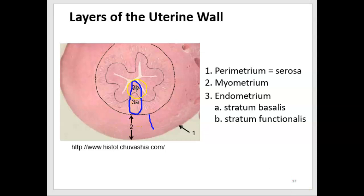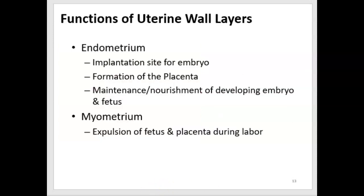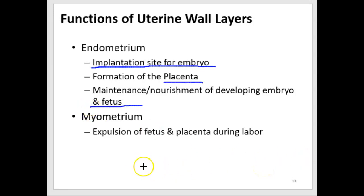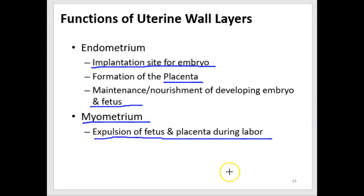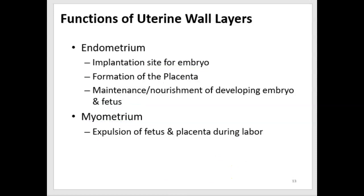There are two layers of the endometrium labeled 3A and 3B. One layer is called the stratum basalis, and the other is called the stratum functionalis, which is the most interior layer. The endometrium forms the placenta and provides a nourishing site with blood vessels, epithelial cells, and nutrients for implantation and development of the embryo and fetus. The myometrium, containing smooth muscle, is what helps expel the fetus and placenta during labor.